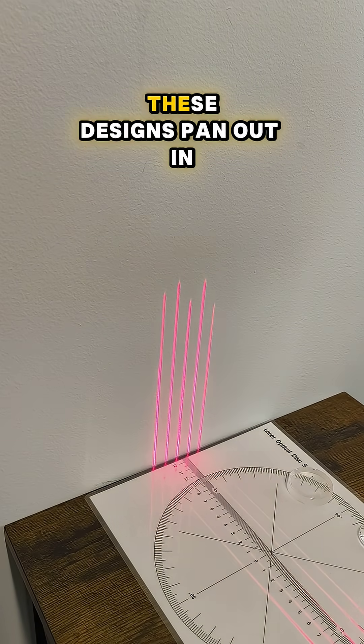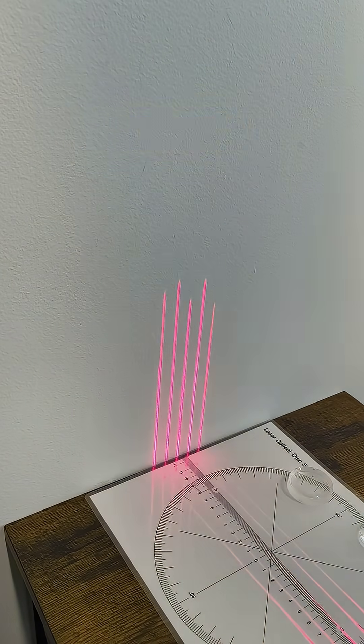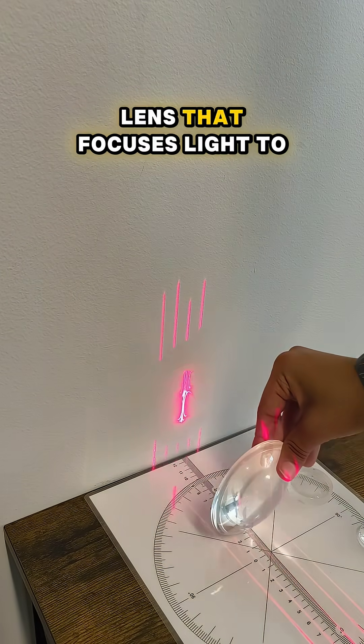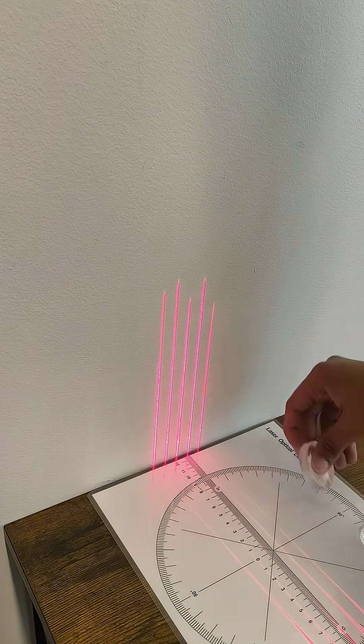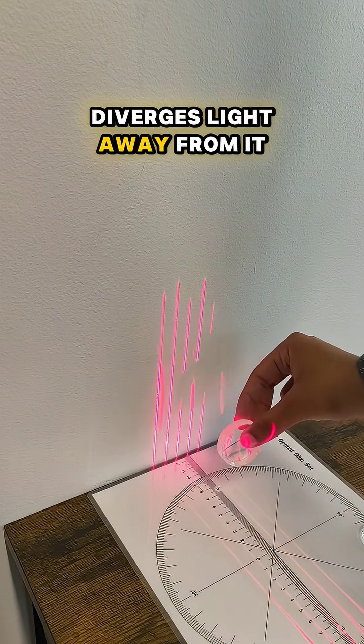Now we're going to see how these designs pan out in real life. For that we're going to use a convex lens that focuses light to a point and a concave lens that diverges light away from it.